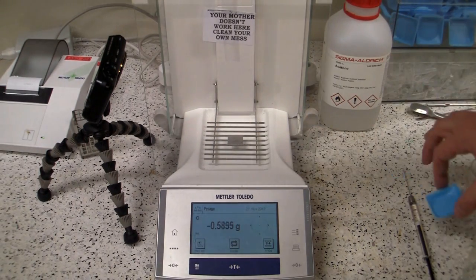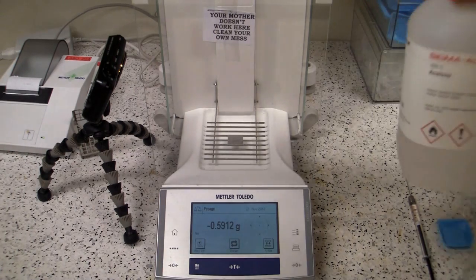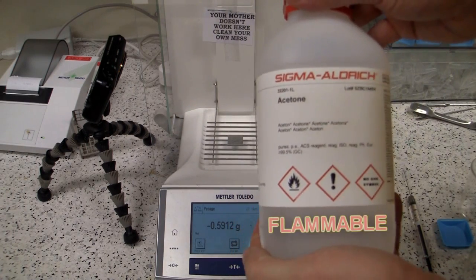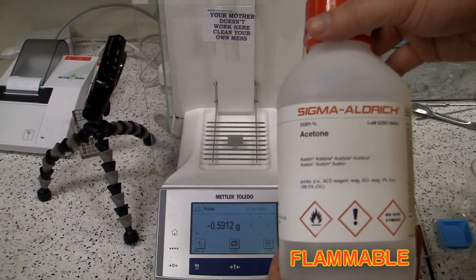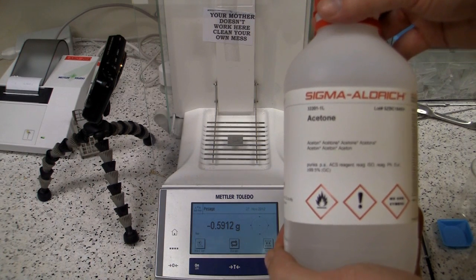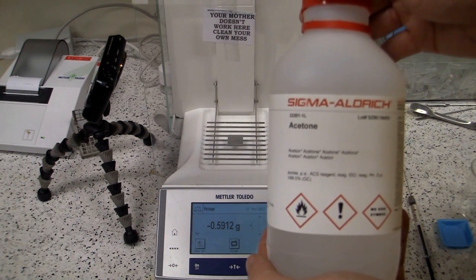So what did I show you all that for? Well, we're going to have a play with this stuff now. This is acetone. It's used as a solvent in organic chemistry. And it's also nail varnish remover, would you believe it?